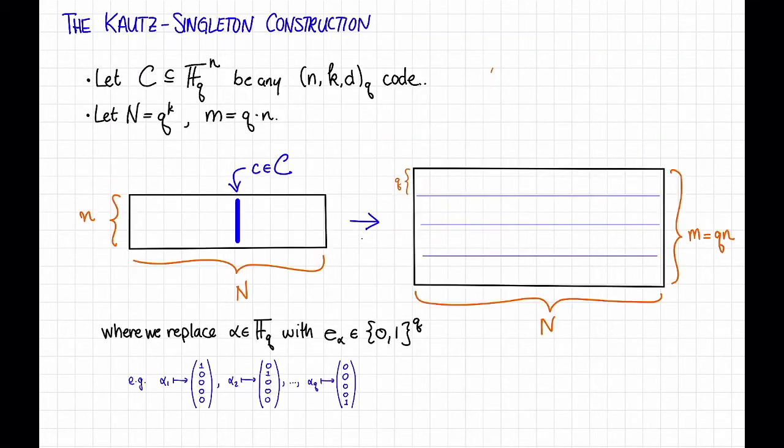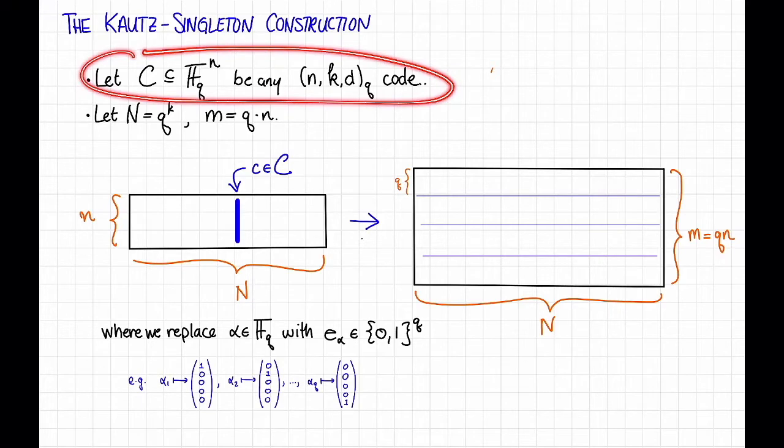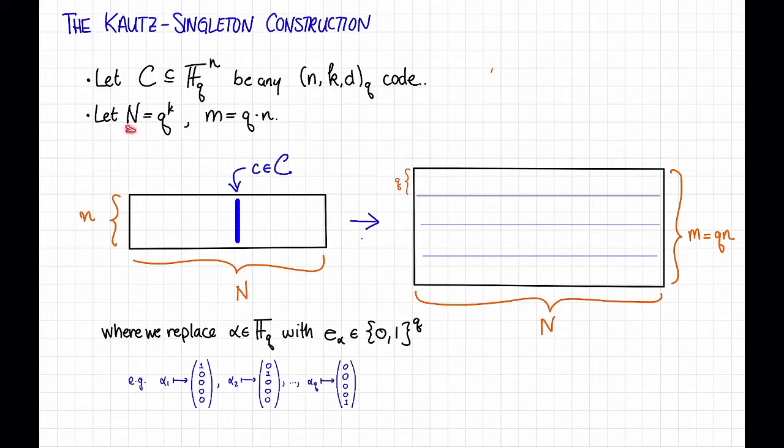Here's how the construction works. This is called the Kautz-Singleton construction. We're going to start with any code. So let C be a q-ary code with block length n, dimension k, and distance d. Let capital N be equal to q to the k, that's our number of items, and let m, our number of tests, be equal to q times n. We're going to choose these parameters n, k, d, and q later, but for now, let's just leave them as floating so we can see how everything fits together.